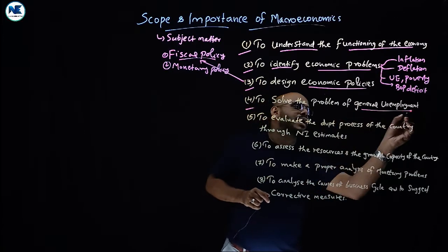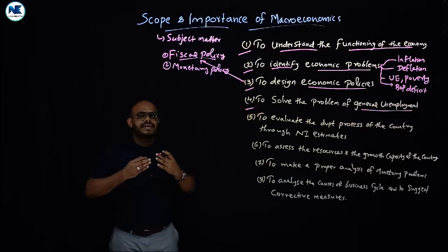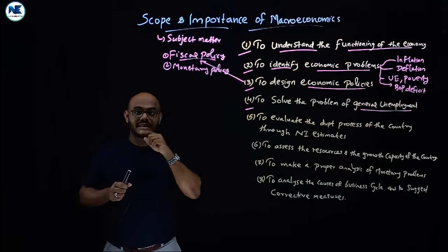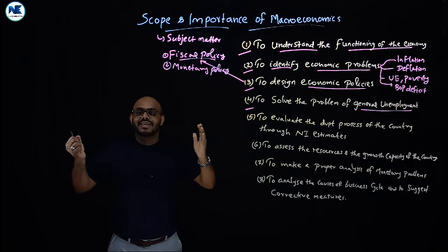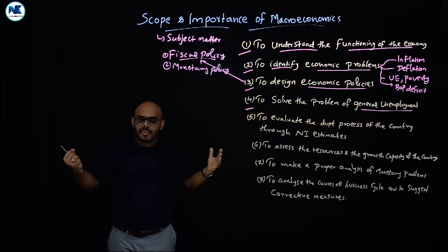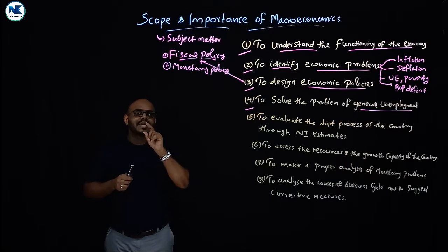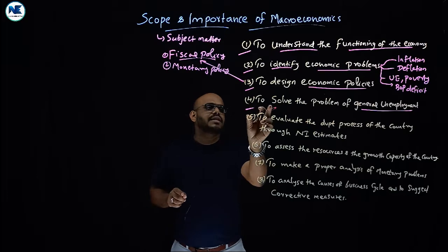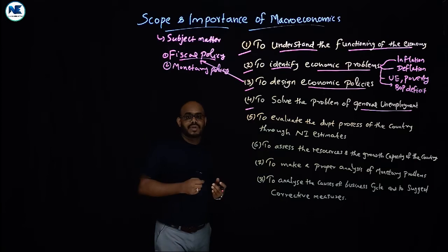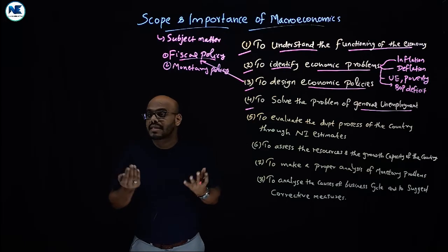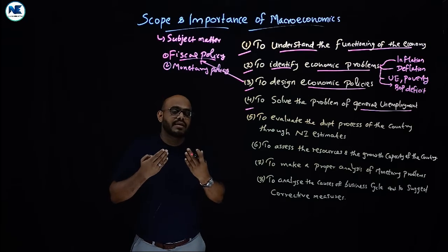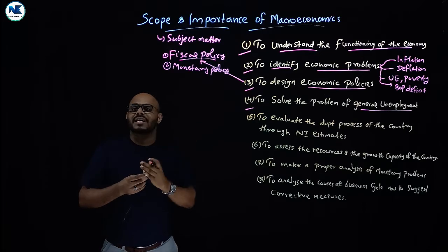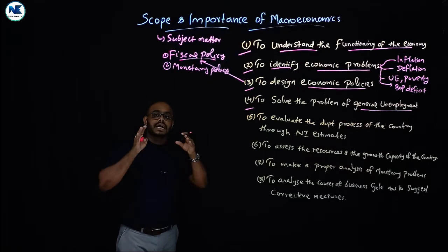The fourth point is to solve the problem of general unemployment. Keynes, observing the Great Depression of the 1930s with widespread general unemployment, argued that the laissez-faire system was inadequate. According to J.M. Keynes, the price mechanism alone cannot resolve unemployment, and government intervention through fiscal policy is essential.